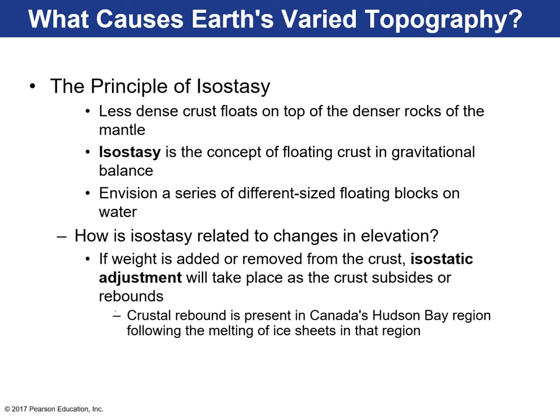One example of crustal rebound is in Canada's Hudson Bay region. There were huge kilometer-thick ice sheets that sat on the crust — heavy cargo pushing the crust downward. But as the Earth approached an interglacial time and the climate warmed, those ice sheets melted away. The cargo was removed from the crust, and today the crust is rebounding and rising as a result of all that weight being removed.